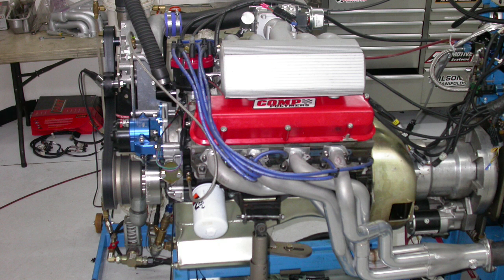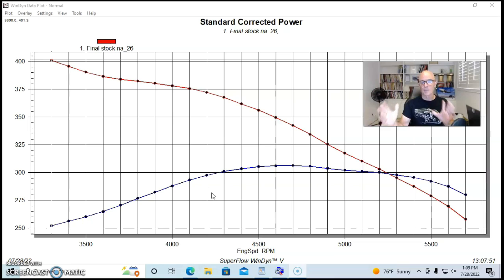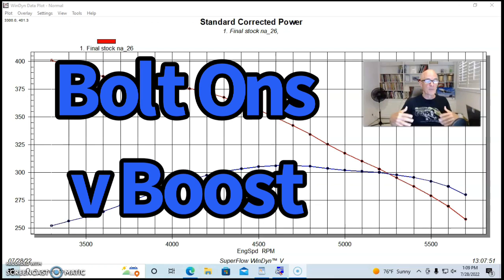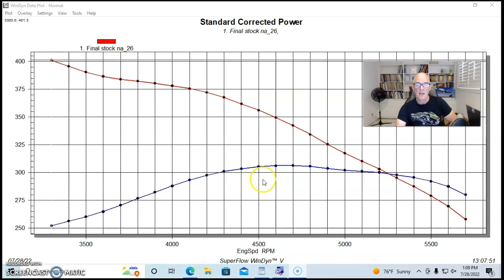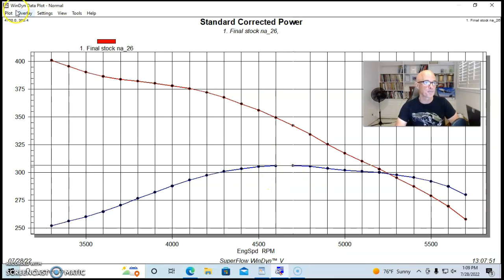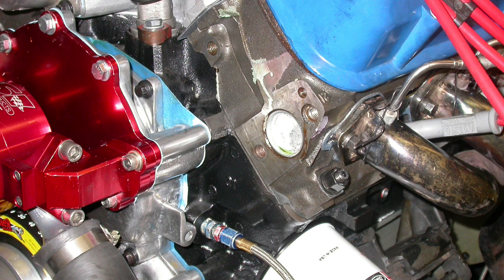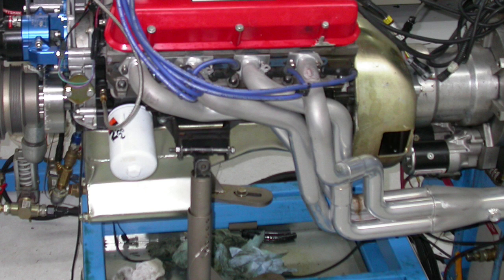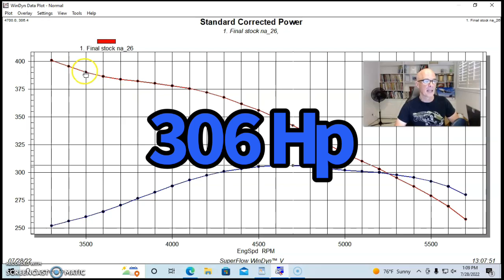We also put ported heads and an intake manifold on it. But we ran this thing with stock head, stock cam, a GT40 intake, long tube headers on the 347. Then we ran it with boost, then changed and upgraded the heads, cam, and intake, and also ran that with boost.